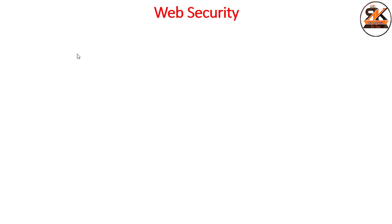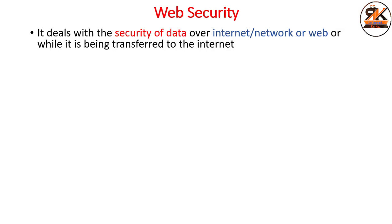In this lecture we will study about web security. Web security is a term which deals with the security of data over the internet, or data that is being transferred over the internet. For example, when you are transferring data between client and server, you have to protect that data, and that security of data is your web security. The security of that type of data is considered under the web security term.